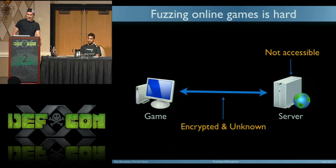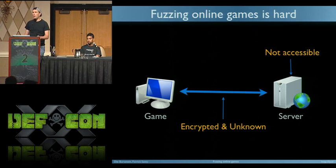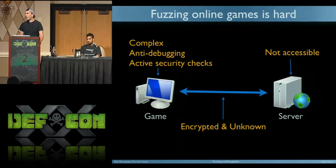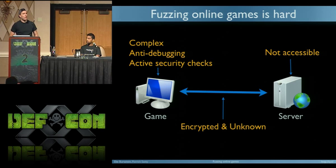The second challenge is when you look at the protocol — over time it has become more and more complicated. Most games, maybe except FarmVille, have very complex, encrypted protocols and you don't really know what's inside. It's really hard to just fire up a sniffer and look at packets; it won't give you much these days. You have to work much harder. And finally, games try their best to prevent you from debugging the code. They have anti-debugging techniques and active security checks. The most well known is the Warden — Blizzard's active security checker — which is a very, very complex piece of code.